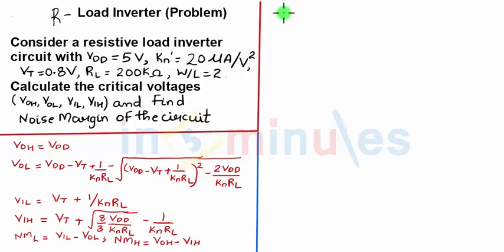Now we know that for a resistive load inverter my VOH is equal to VDD and that is equal to 5 volts which is already given in the question. So that completes my finding of the first critical voltage VOH.